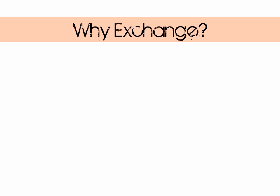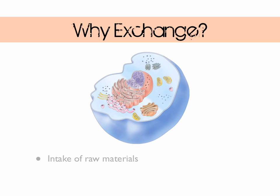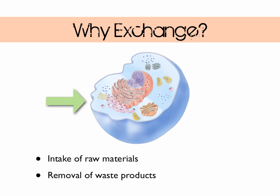So why do we bother with exchange? Our cells need a constant supply of raw materials for metabolic processes. They also need any waste products removing. So here we have an animal cell. The raw materials it might need are oxygen and glucose, and the waste products might be carbon dioxide and urea.